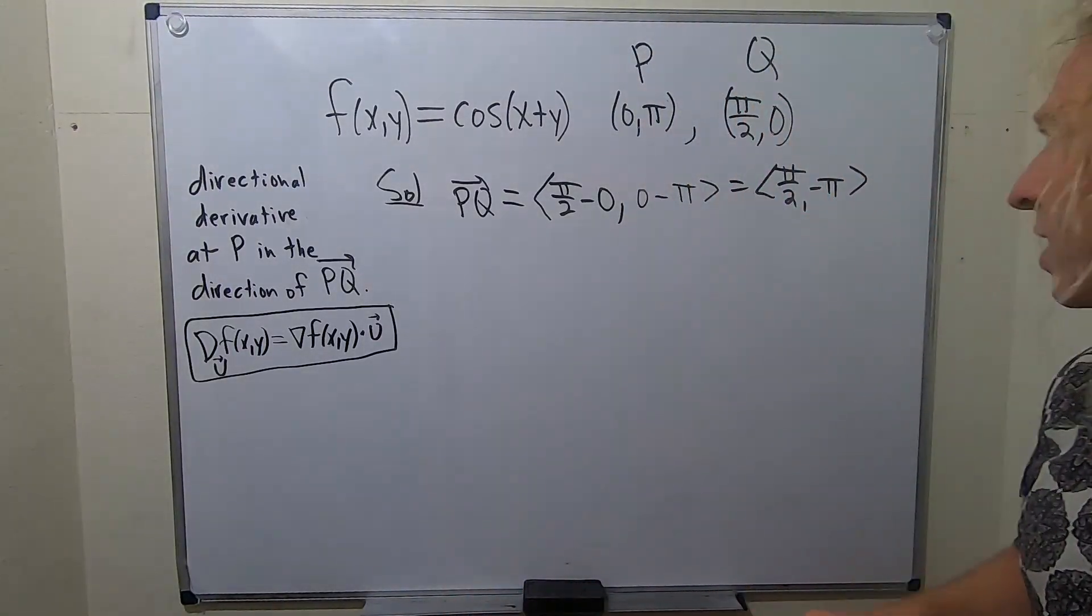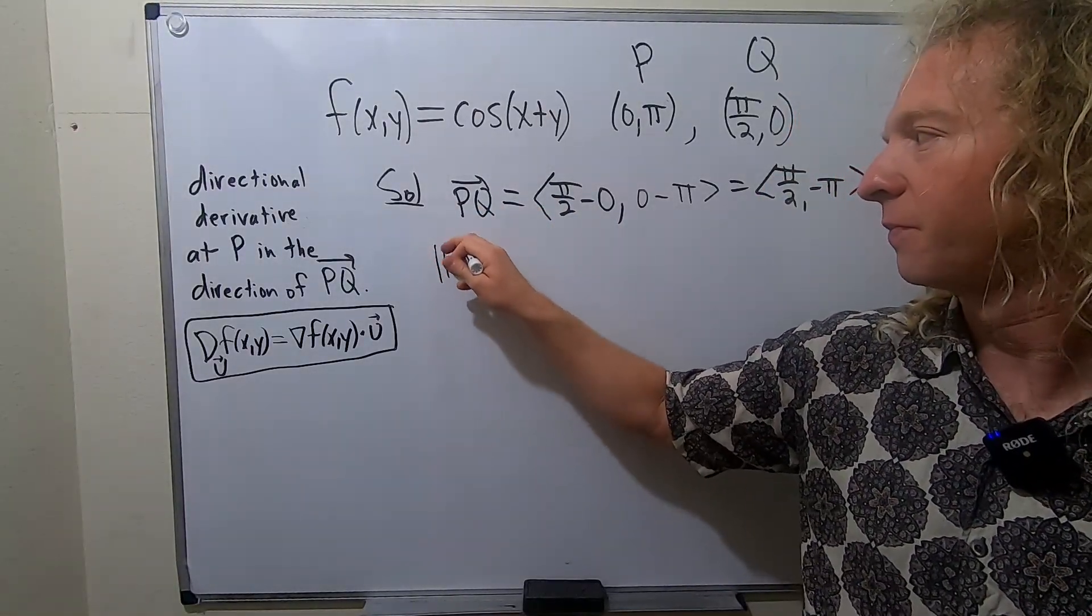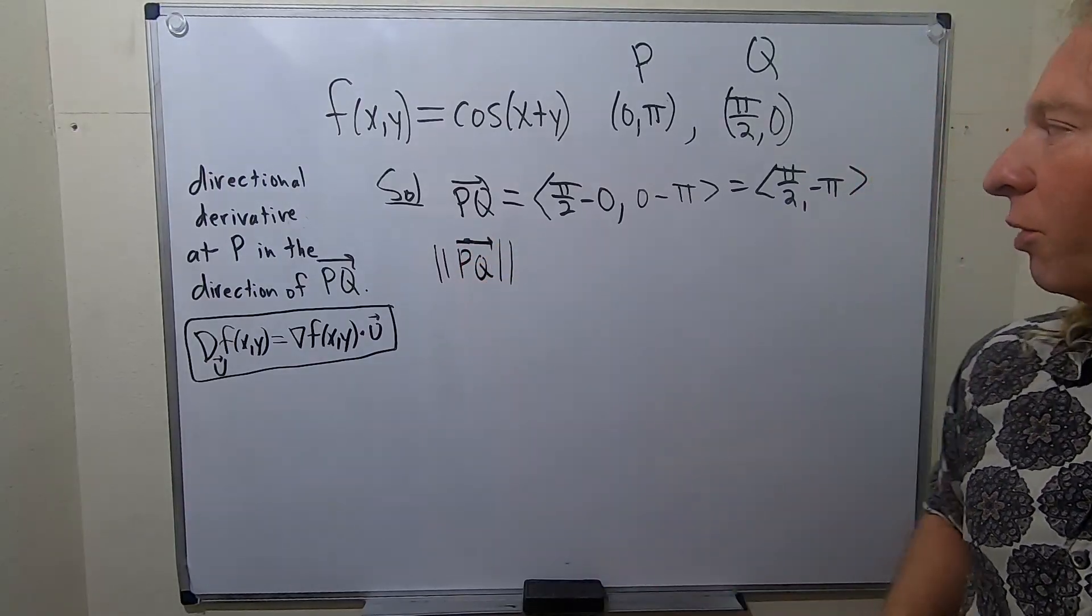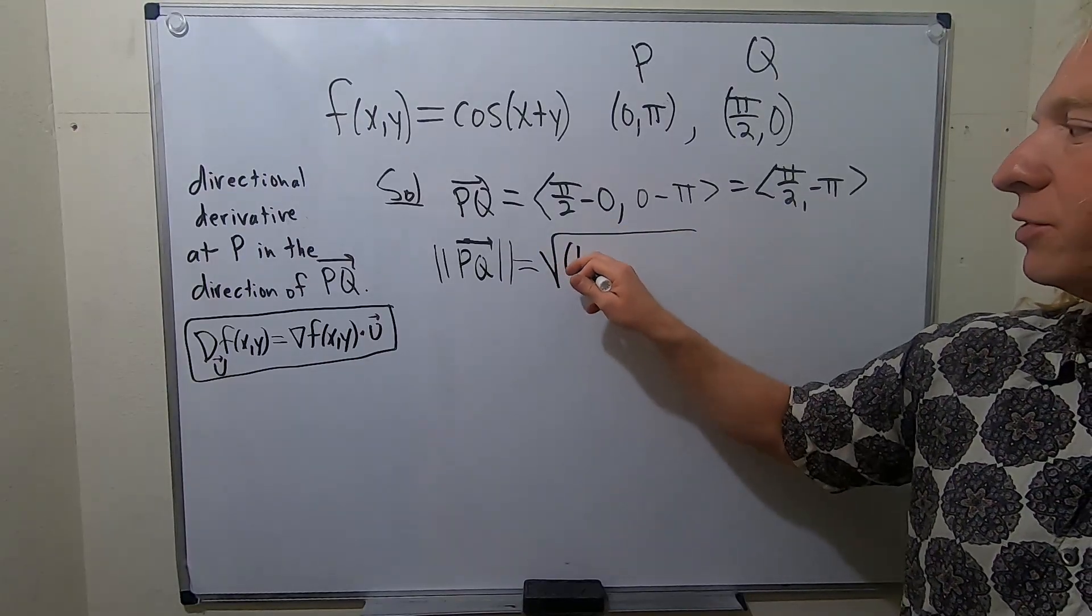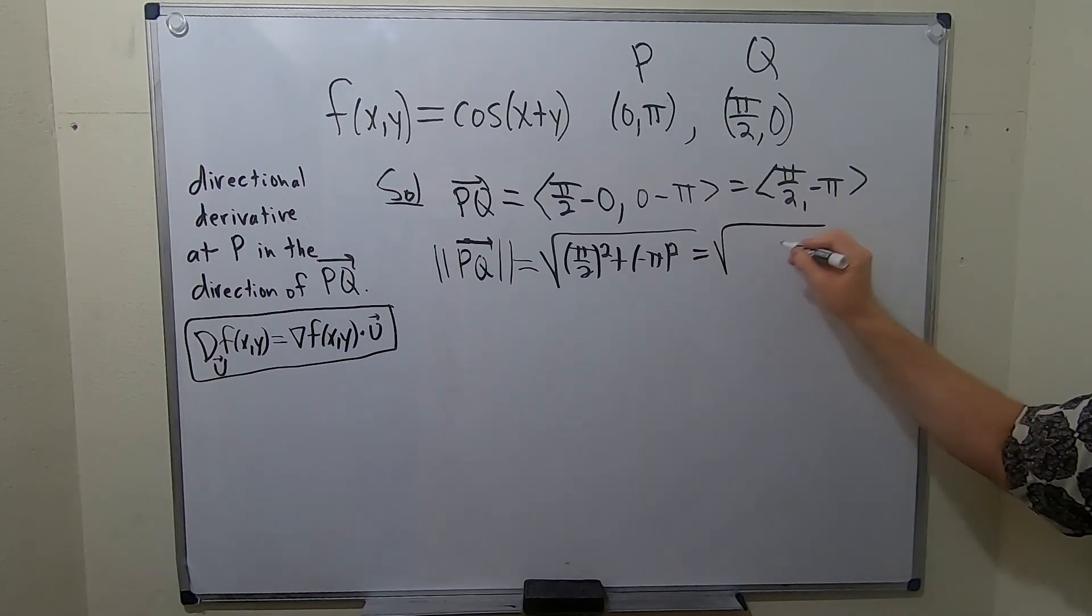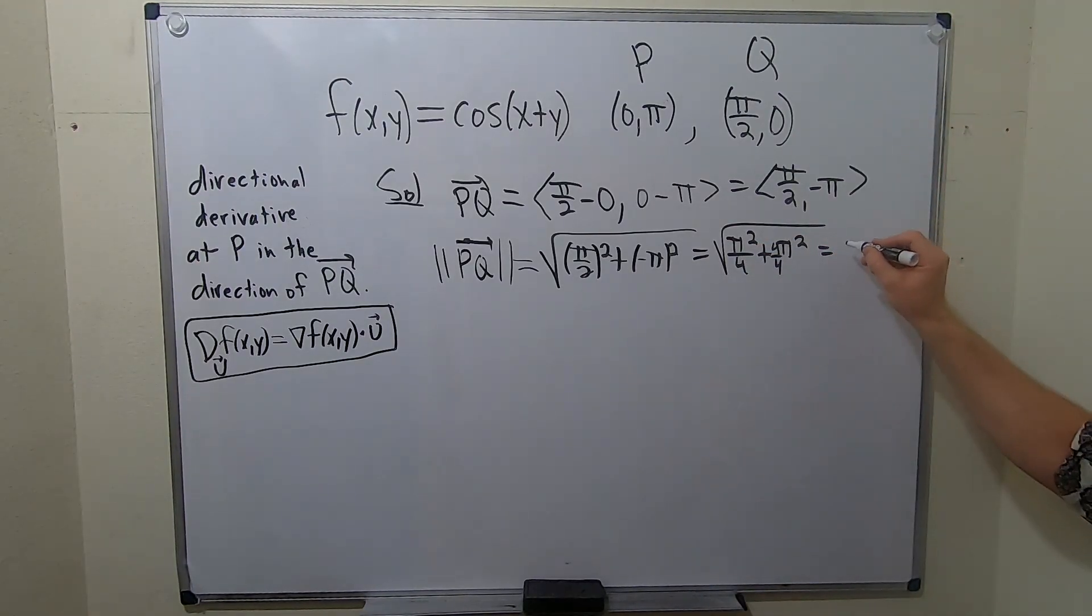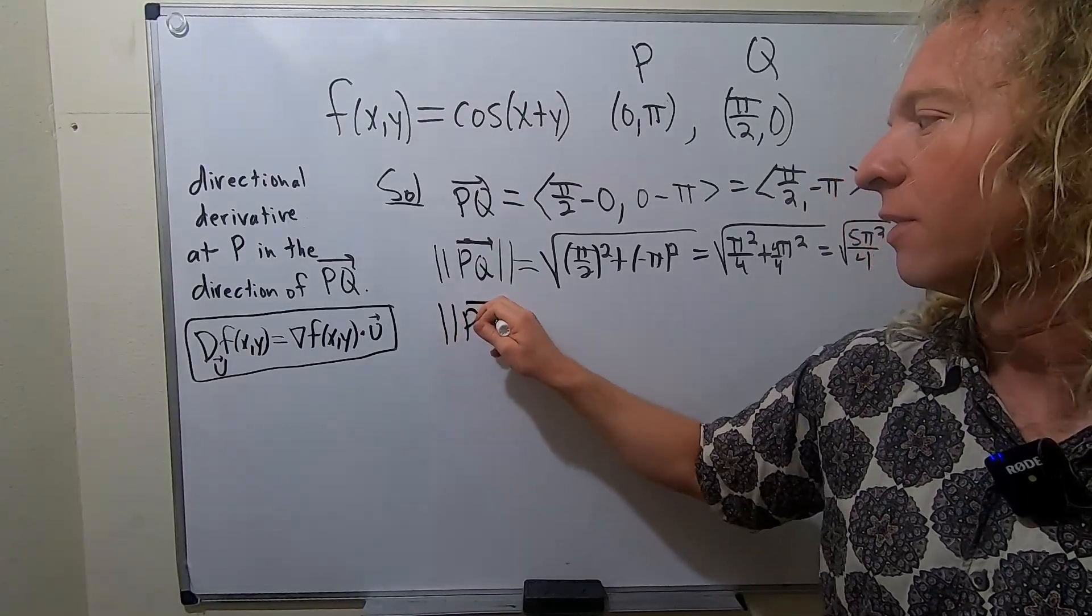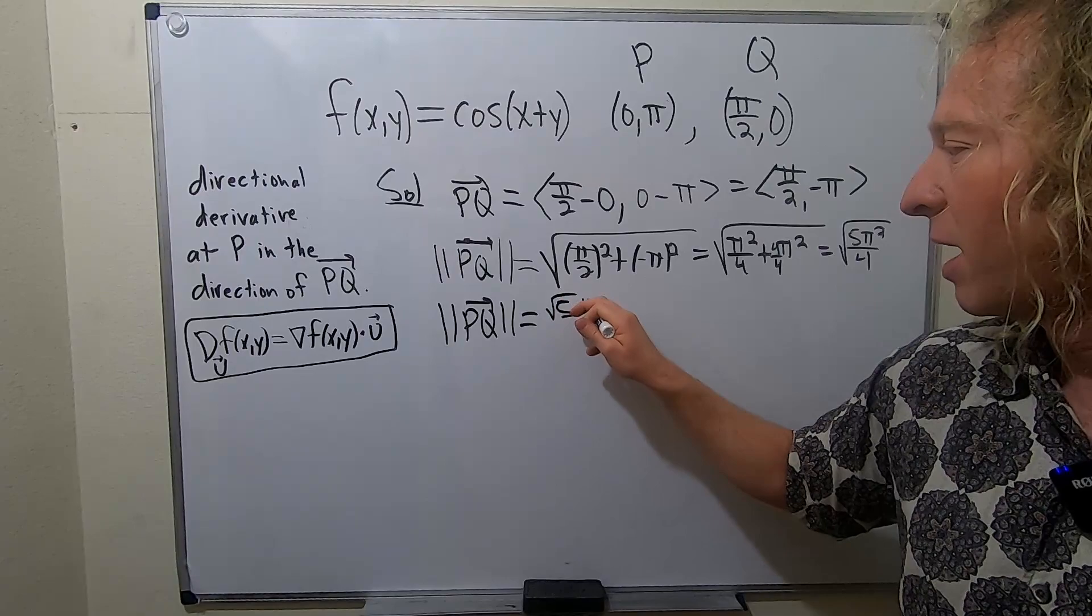Now we have to turn this into a unit vector. We have to make this a vector that has magnitude 1, so we have to divide by the magnitude of PQ. We're basically going to normalize this vector. Recall that whenever you have a vector and you're trying to turn it into a unit vector, you have to divide by its magnitude. This is going to be the square root of π/2 squared plus (-π) squared. This is π²/4 plus π².